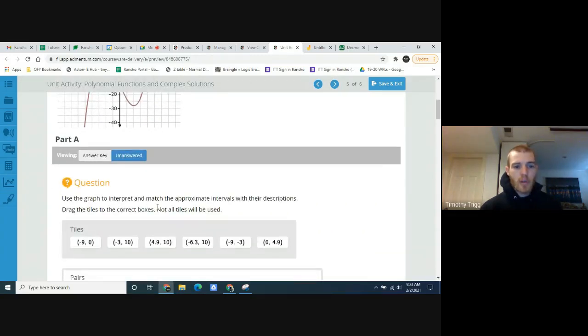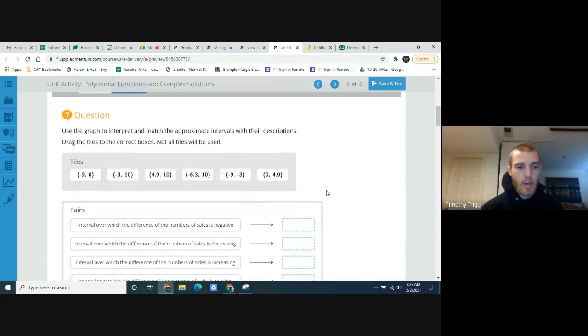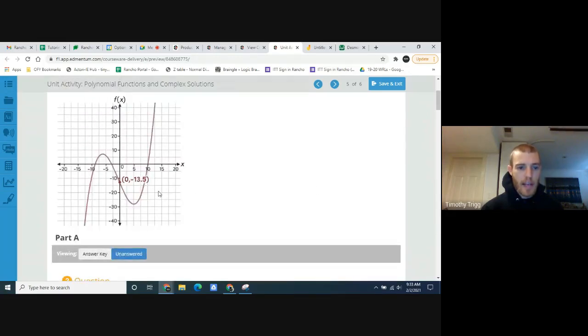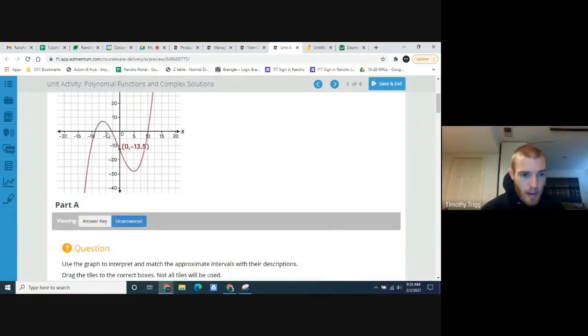Now, use the graph to interpret and match the appropriate intervals with the descriptions. Drag the tiles to the correct boxes. Not all tiles will be used. So the interval over which the difference of the number of sales is negative. So the interval where it's negative. Well, it looks like it's from here to here because that's below the x-axis. What is this amount? If this is 5, this is 2.5, around 3, something around there.